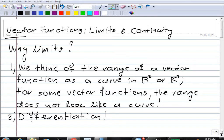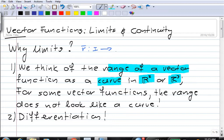So first, let's ask the question: Why should we consider limits? Well, we like to think of the range of a vector function as a curve, either in R² or in R³, depending on whether it's a 3- or 2-dimensional vector function. So if we have a function r defined on an interval I into, say, R³, then we look at the set of possible values of this vector function, and we like to think of this as a curve. But for some vector functions, the range does not look like anything we would consider a curve. One can construct vector functions that just give you infinitely many discrete little dots, and that's not a curve.